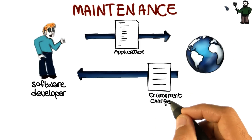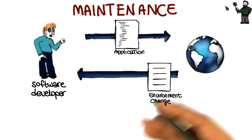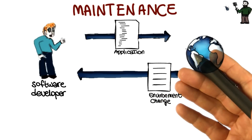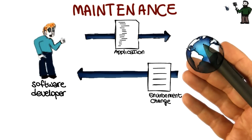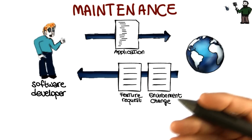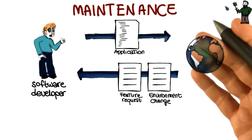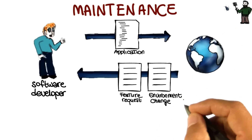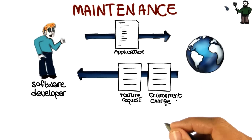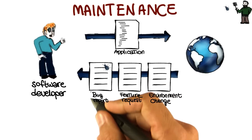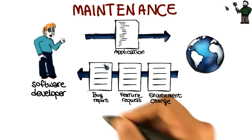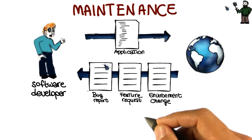For example, the environment might change — there might be new libraries, there might be new operating systems in which our software has to operate. Or, there may be feature requests, so the users might find out that they want to do something different with the problem that we gave them. Or, and this is one of the most common occurrences, users might find problems with the software and may file bug reports and send them back to the software developer.